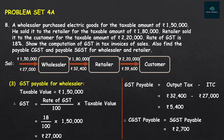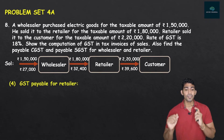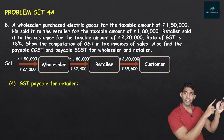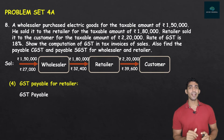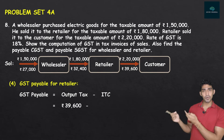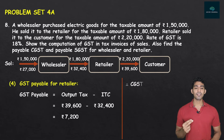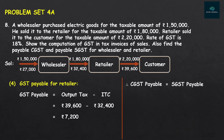That completes GST Payable for the wholesaler. Now for the retailer: GST Payable = output tax minus ITC = 39,600 minus 32,400 = Rs. 7,200. CGST payable = SGST payable = half of 7,200 = Rs. 3,600 each. The question is finally done. It was lengthy but simple — a little practice is needed.